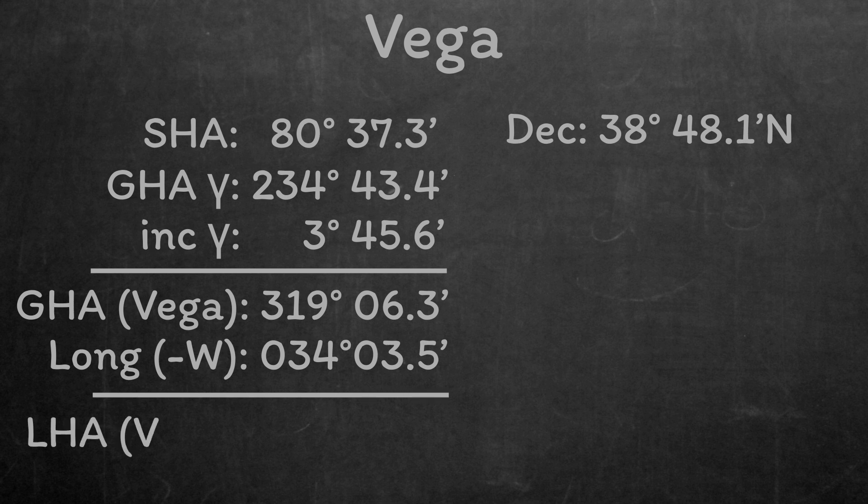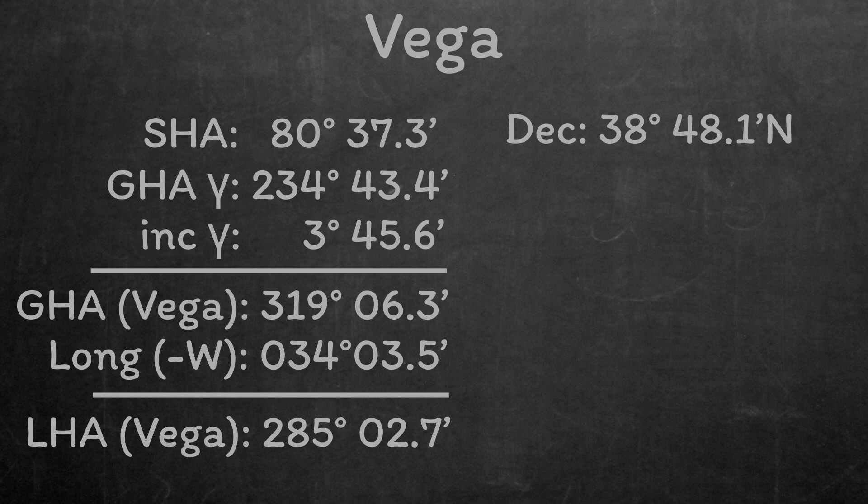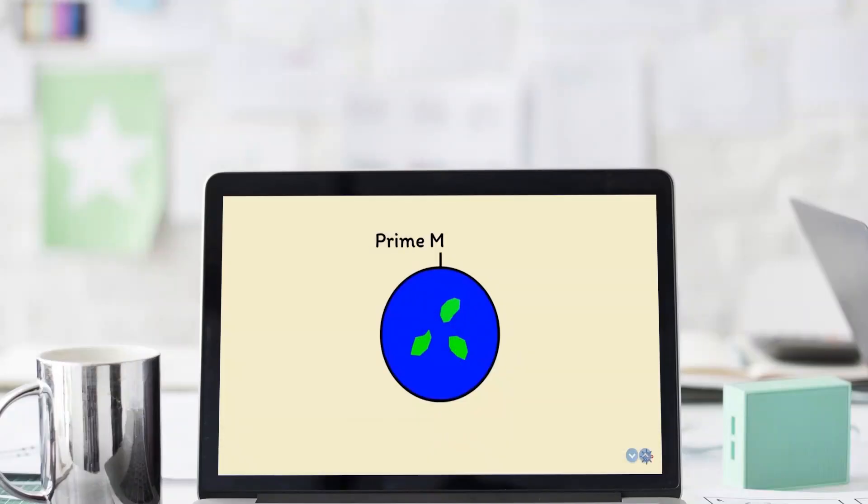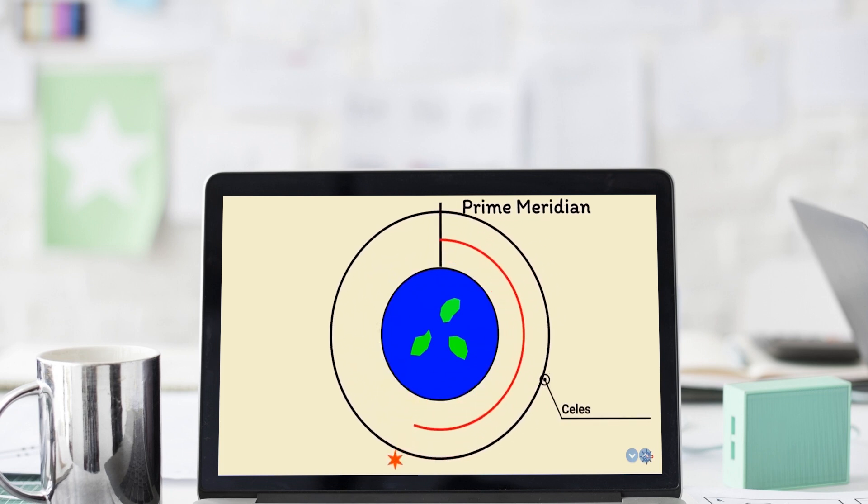This gives us a local hour angle of Vega of 285 degrees, 2.7 minutes. If I've gone through all that too quickly, check out the video on finding an azimuth of a star, where I walk through a local hour angle calculation much slower, and I explain it as we go along.